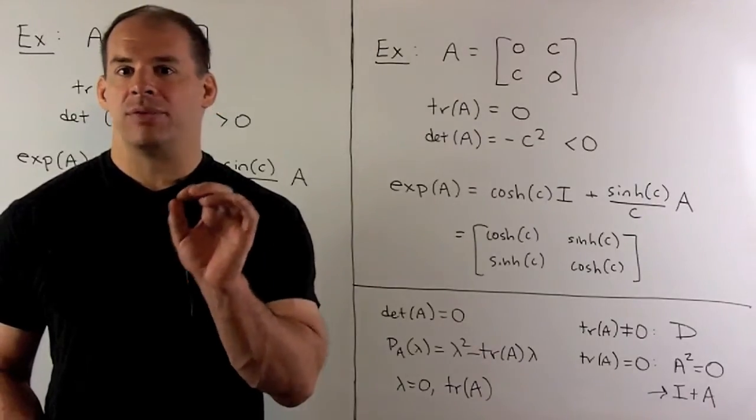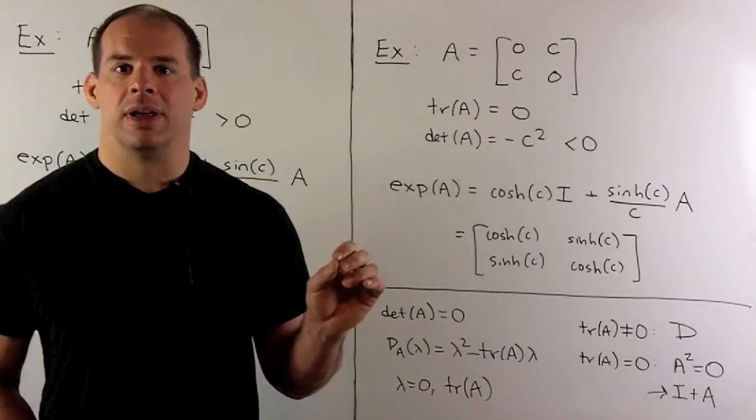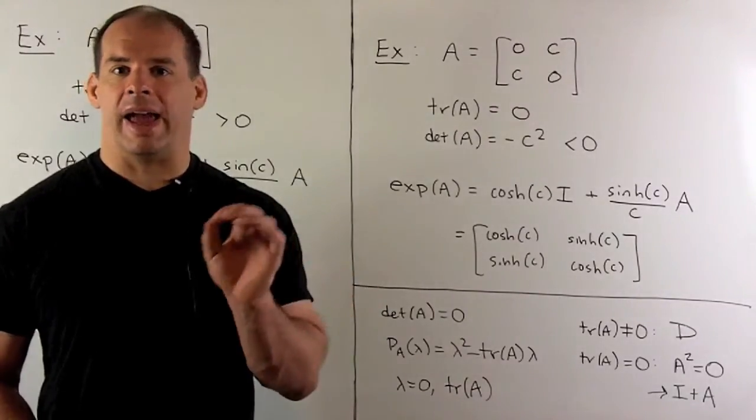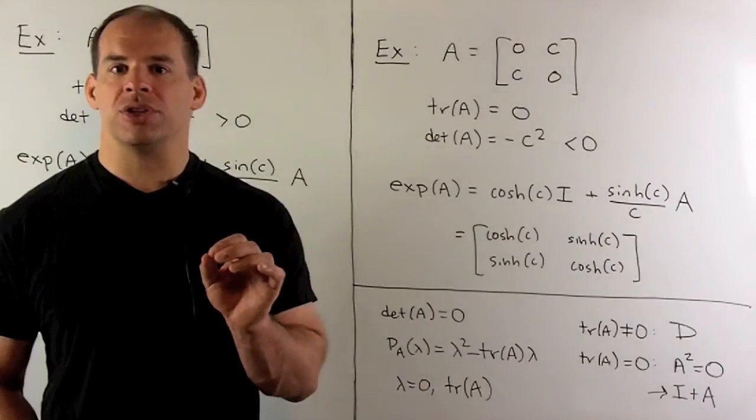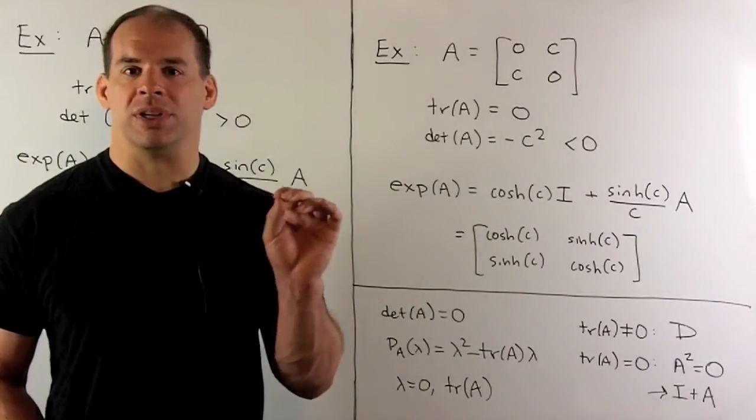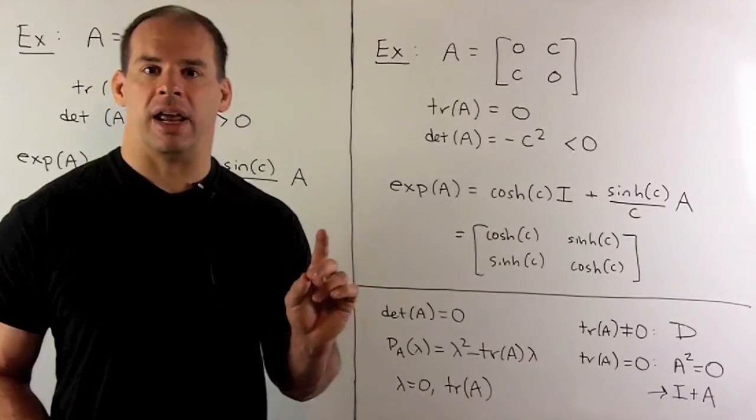If we have trace of A equals zero, then we have lambda squared for the characteristic polynomial. A squared is zero, so the exponential is just going to be one plus A. So determinant equal to zero is covered in any event.